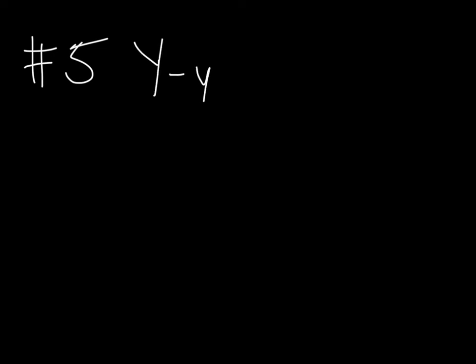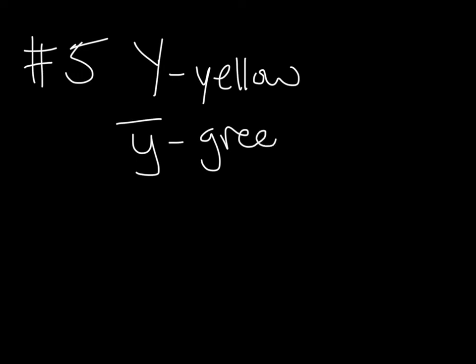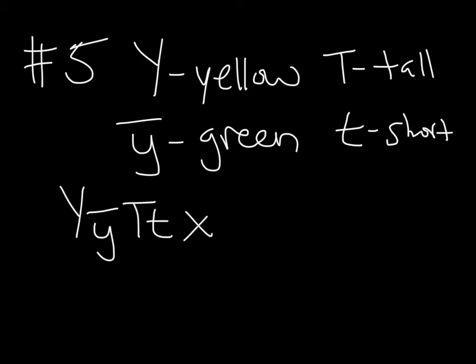Questions 5 and 6 are the same question worked two different ways. Question 5 involves two different genes. The Y gene codes for yellow color of pea plant seeds, and little y codes for green color of the seeds. Big T codes for a tall plant and little t codes for a short plant. We're going to do a dihybrid cross — parents heterozygous for both traits, which is what a dihybrid is.